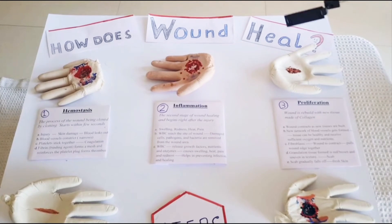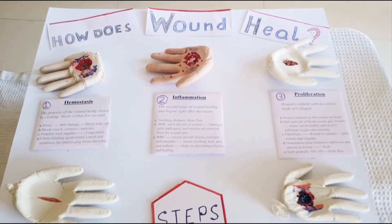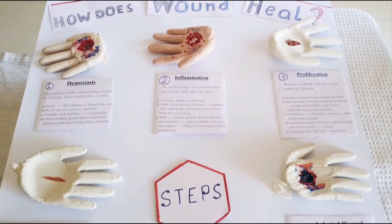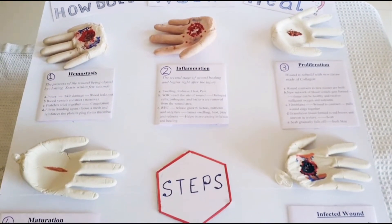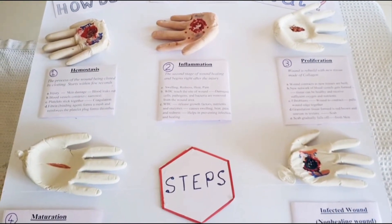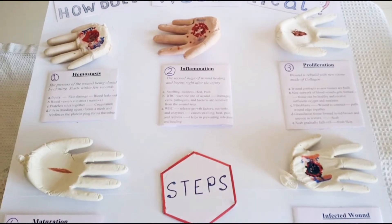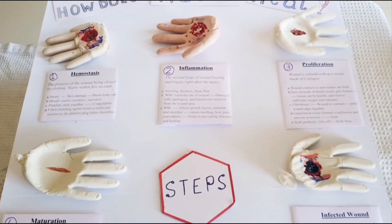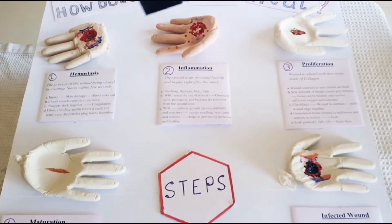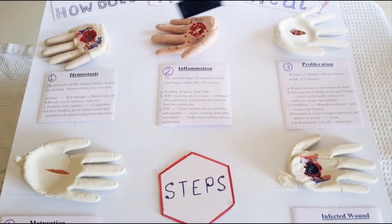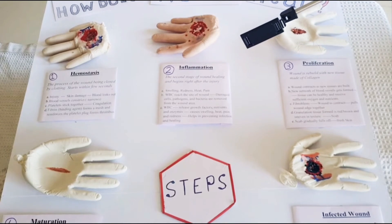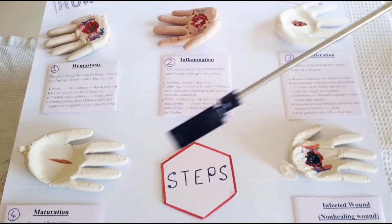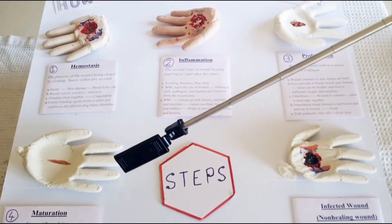How does a wound heal? Today we are going to learn about the amazing and magical process by which wounds heal. Wound healing takes place in four steps: hemostasis, inflammation, proliferation, and maturation.